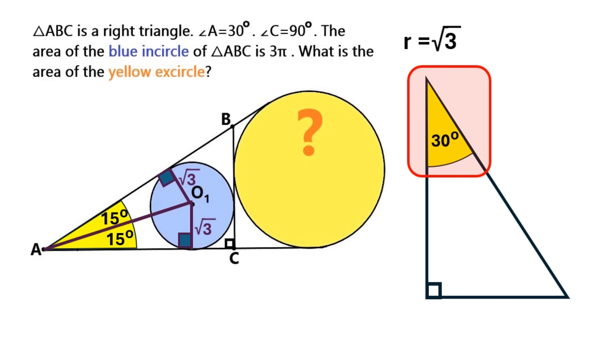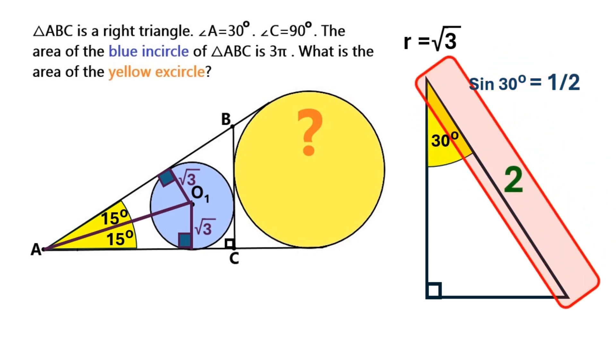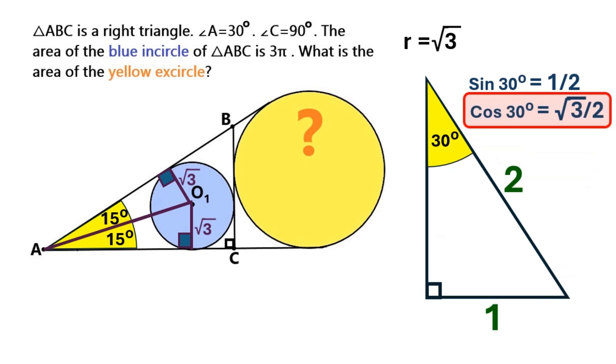Let's say this angle is 30 degrees, and everybody knows that sine 30 is 1/2. So if we assume this hypotenuse to be 2, then this side must be 1. And it is also well known that cosine 30 is √3/2, which means this side over here has to be √3. Next we put this angle bisector in here, dividing this 30 degree angle into two 15 degree angles.